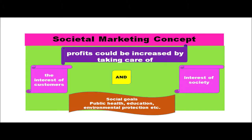The next philosophy is the societal marketing concept. Here it is believed that profits could be increased by taking care of the interest of customers as well as the interest of society. This is a combination of marketing and concern for society — satisfying customers while also doing something that benefits society, such as producing environmentally friendly goods, building hospitals and schools, maintaining parks, and supplying good quality products. Social goals like public health, education, and environmental protection come under taking the interest of society into consideration.